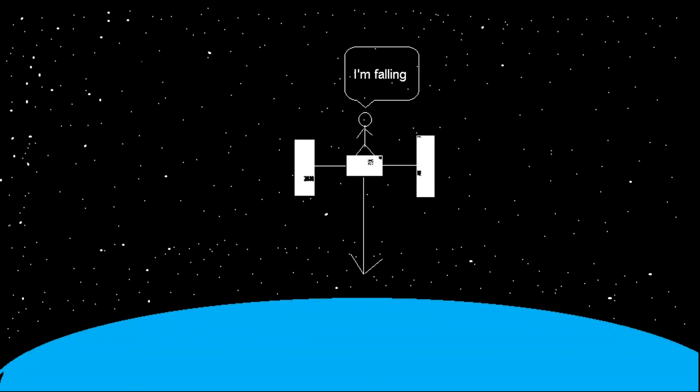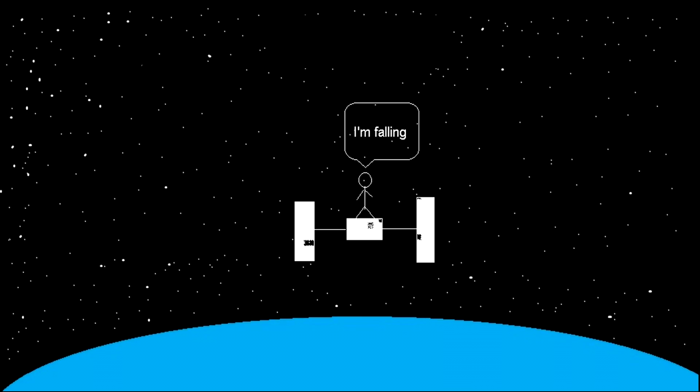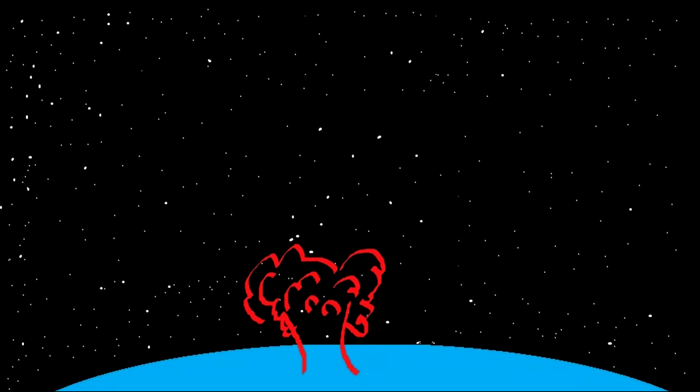You may ask, well, if astronauts are falling towards Earth, then why don't they get closer to Earth and eventually smash into it? Well, that's because they are also moving sideways.